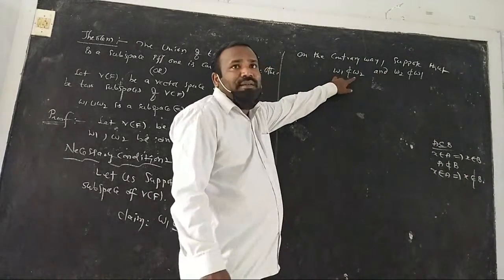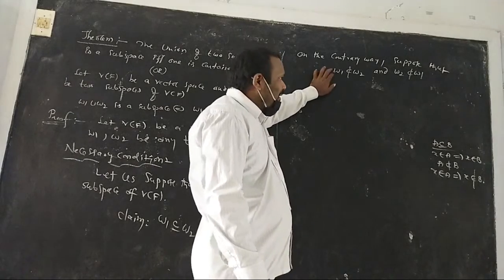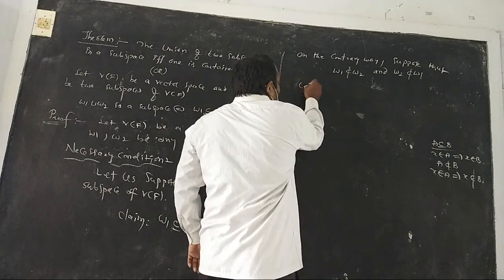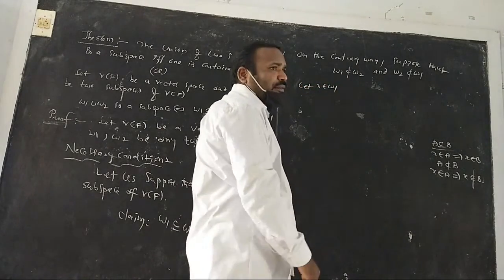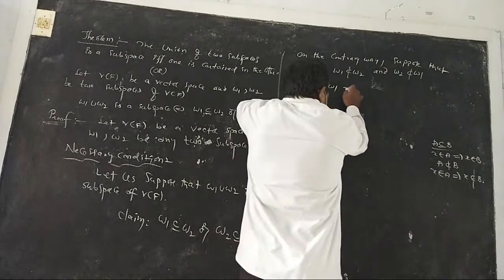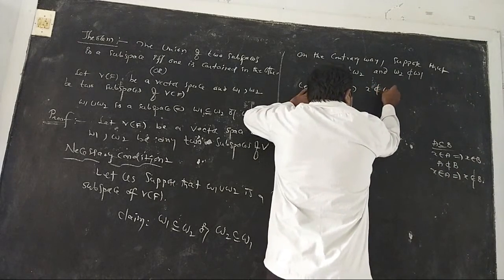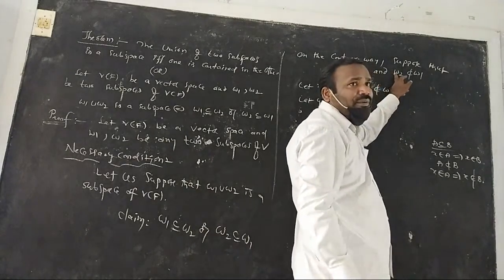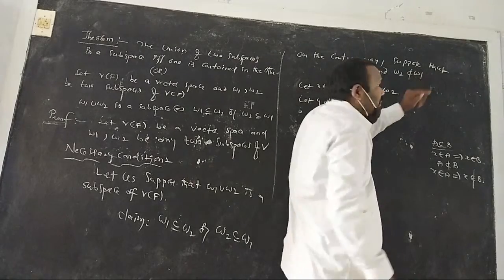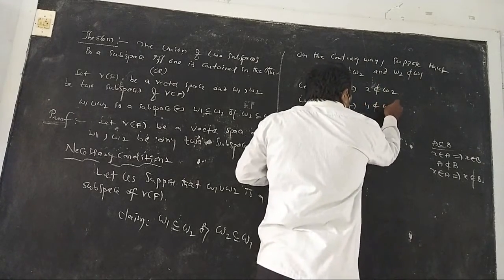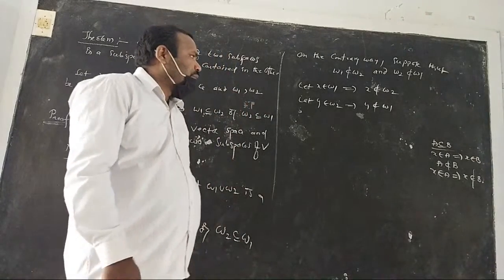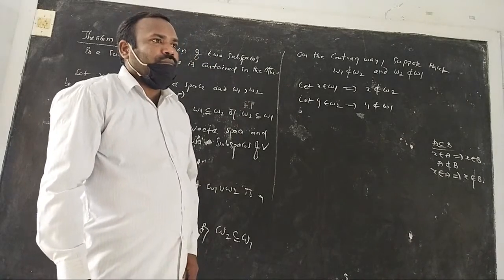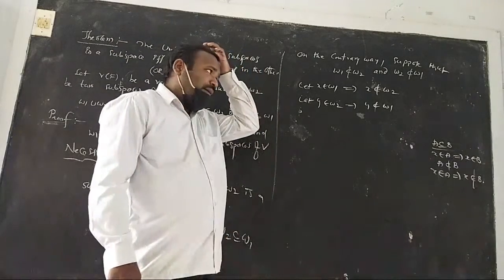So: W1 is not a subset of W2 — take an element x belonging to W1 such that x does not belong to W2. And W2 is not a subset of W1 — take an element y belonging to W2 such that y does not belong to W1.